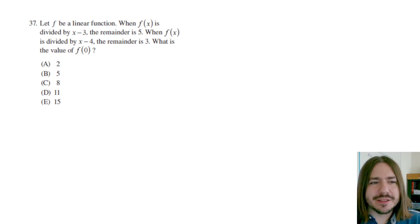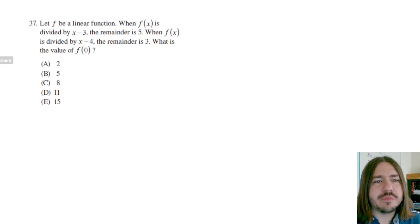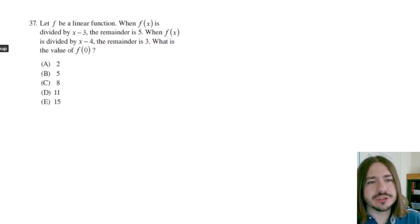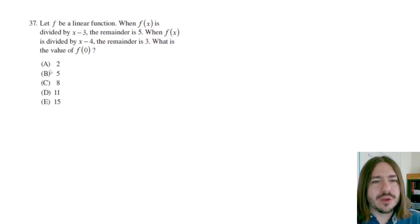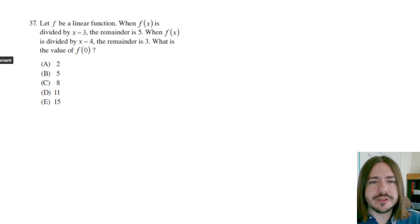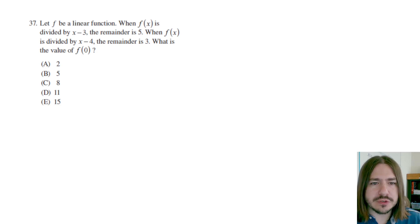Hey y'all, welcome back. Number 37 says: let f be a linear function, so it's got a constant rate of change — it's degree 1. When f of x is divided by x minus 3, the remainder is 5. When f of x is divided by x minus 4, the remainder is 3. What is the value of f of 0?